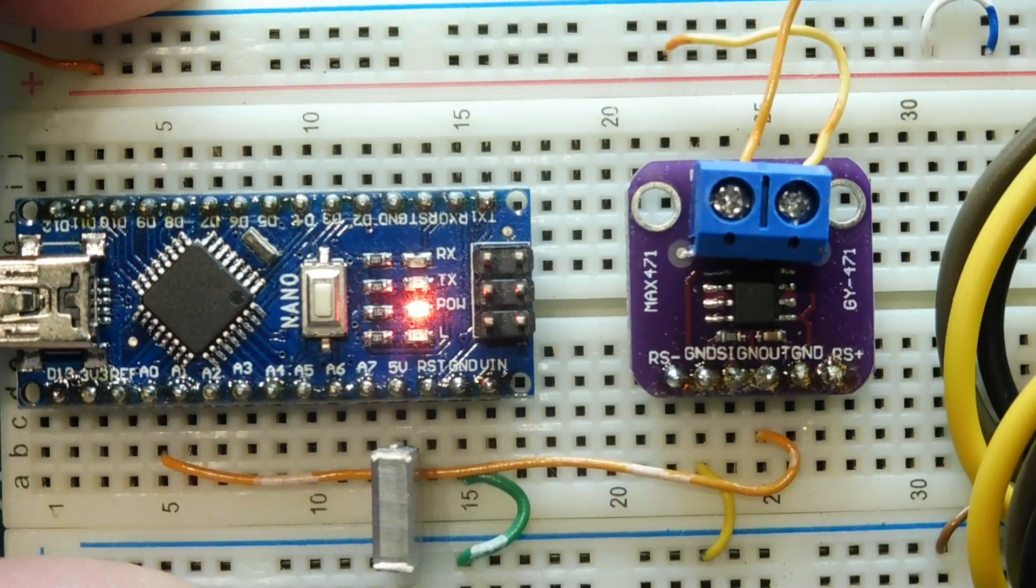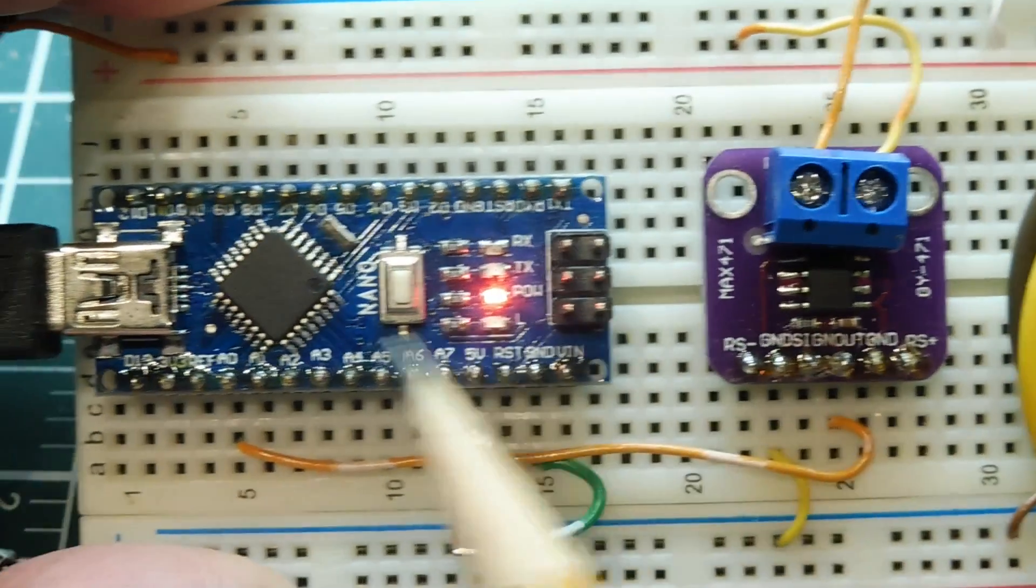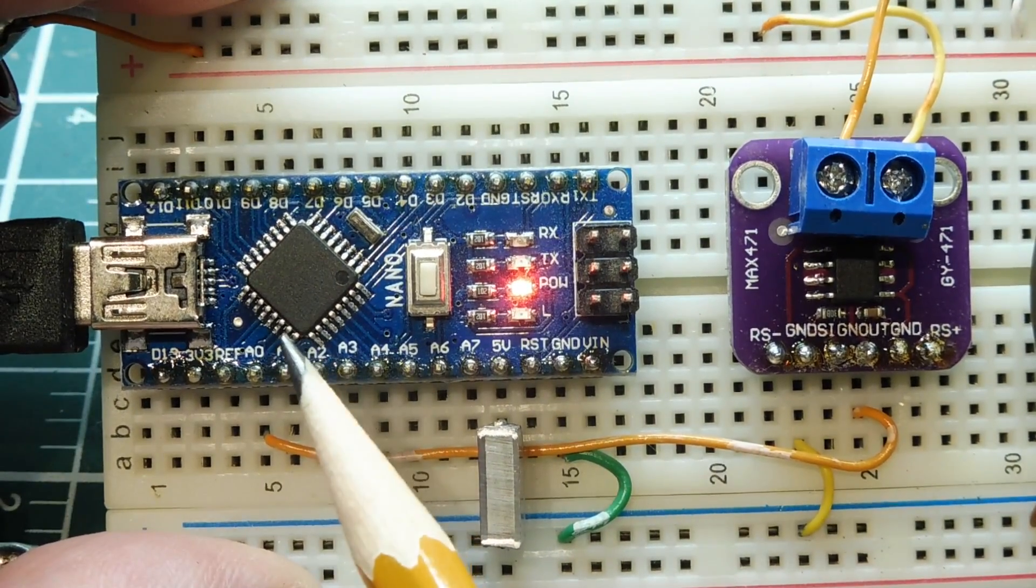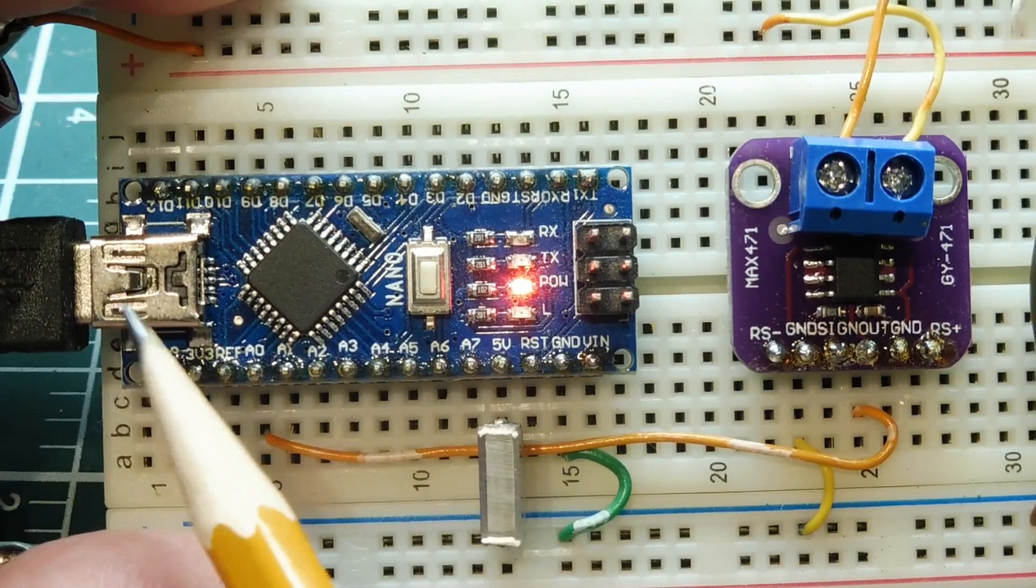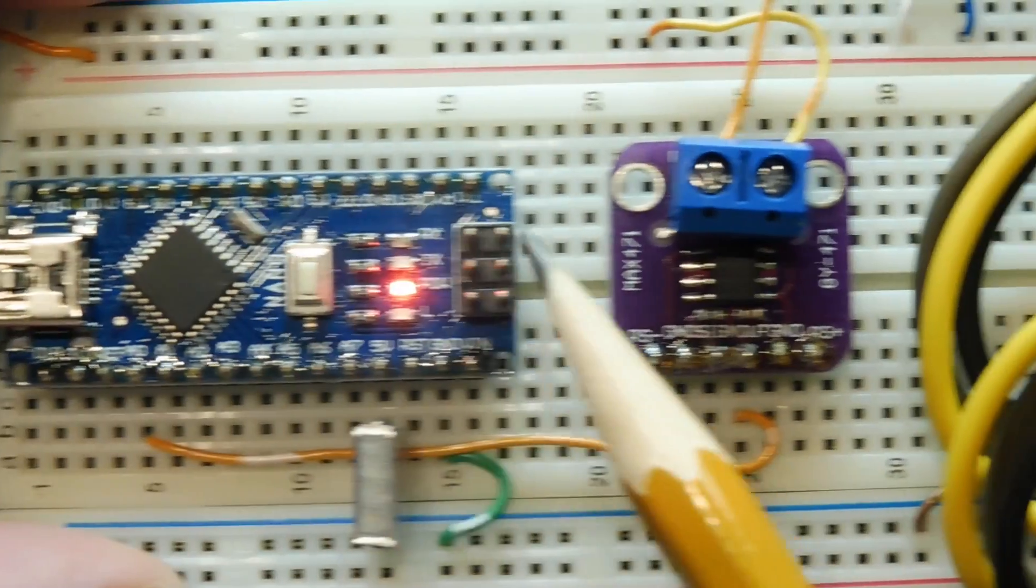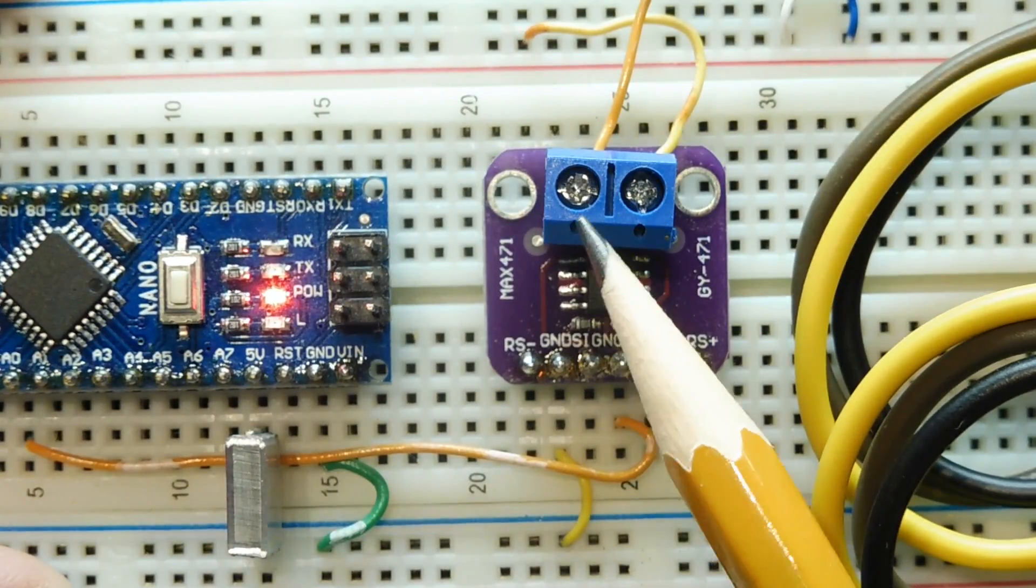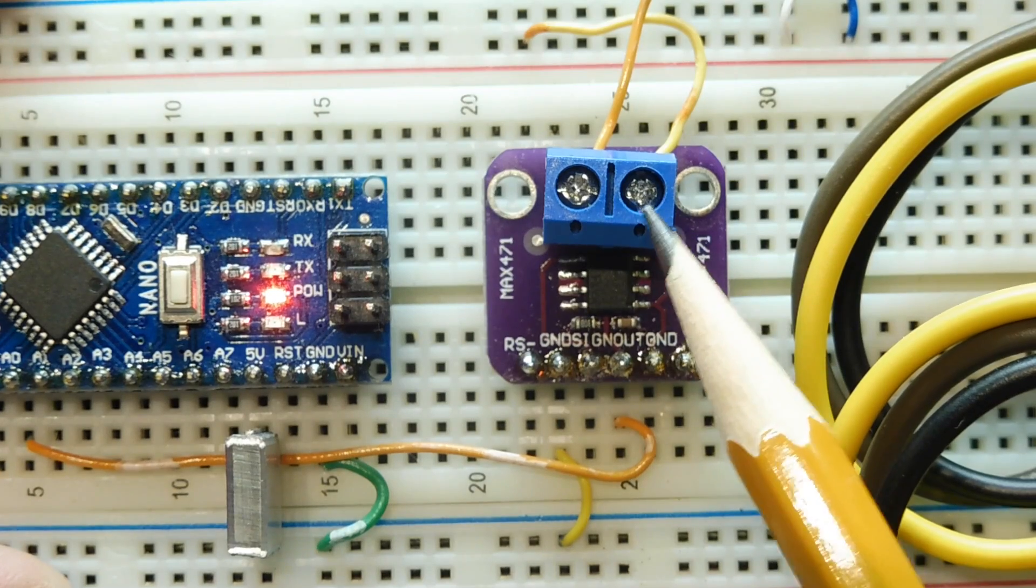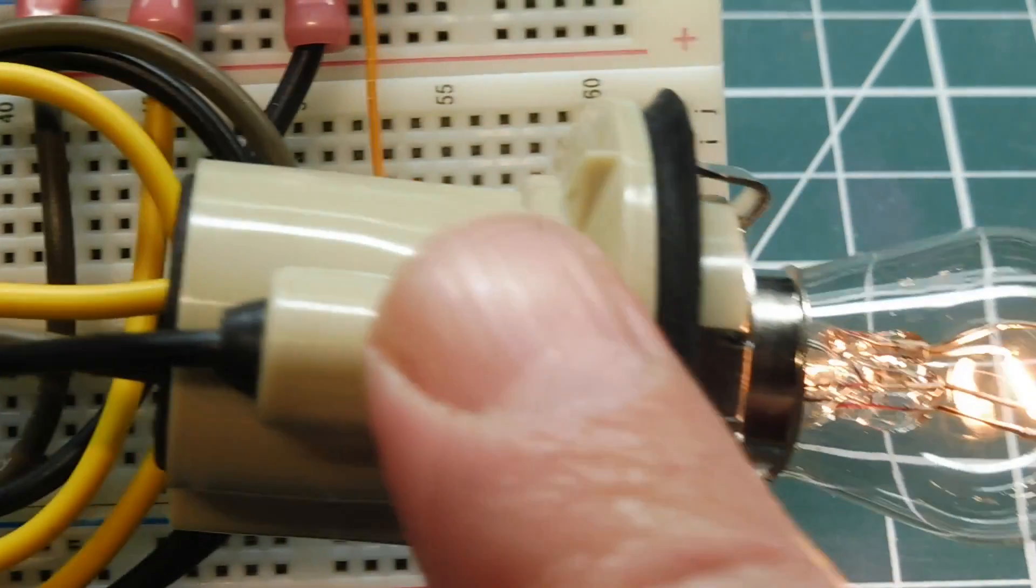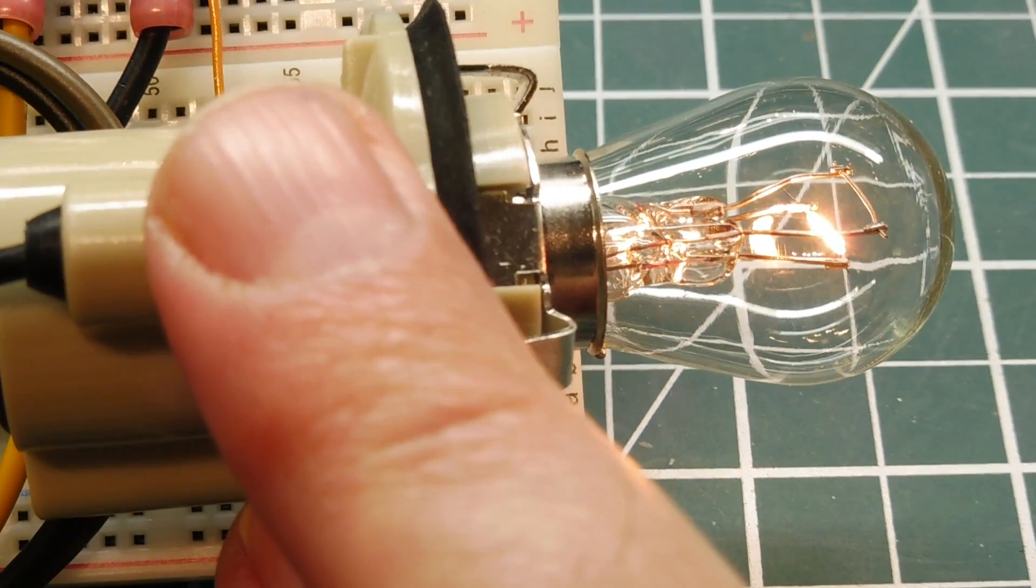I have my MAX471 breakout board mounted on my breadboard together with my Arduino Nano. My Nano is getting powered through the USB port, so it's getting 5 volts through the USB port. I have a 0 to 12 volt power supply feeding one end of the sense resistor on the MAX471. On the other end of the sense resistor, it's connected to the load. The load in my case here is a light bulb - an automotive light bulb, 12 volt light bulb. And right now it's drawing about 1 amp.